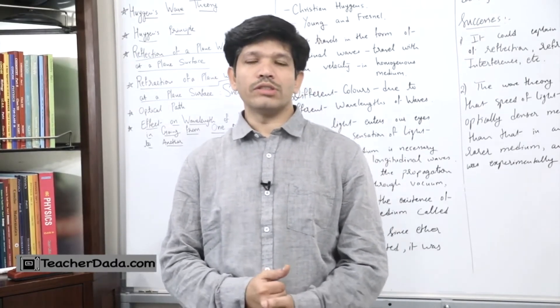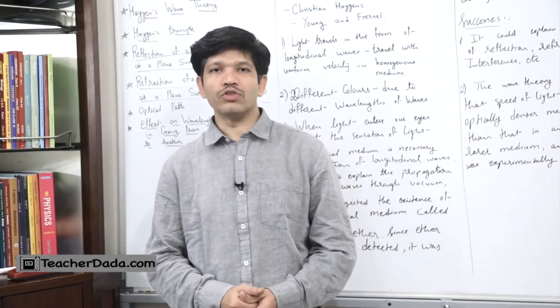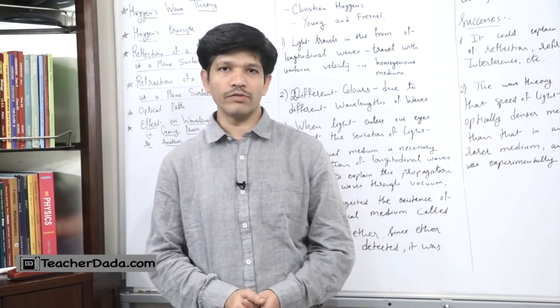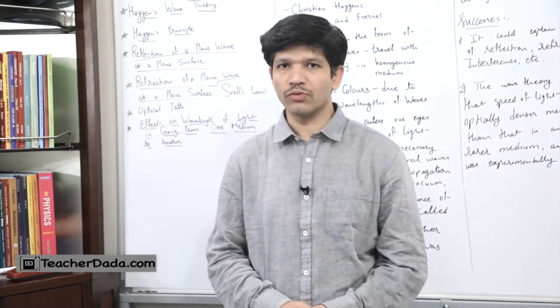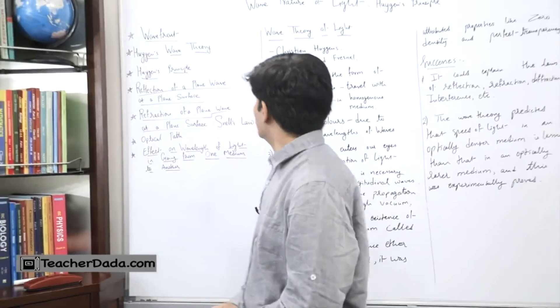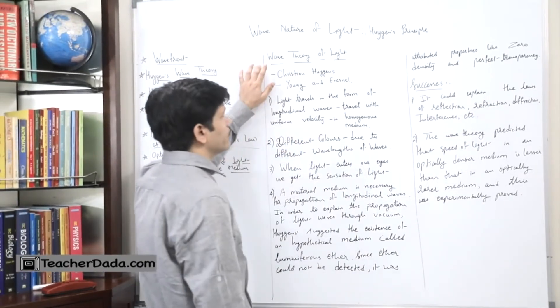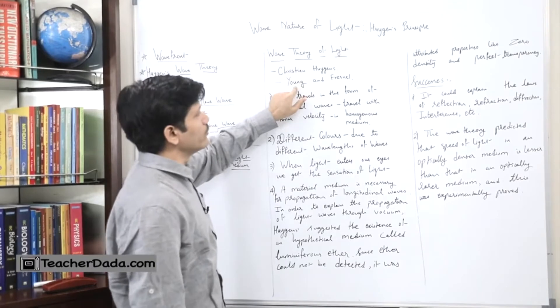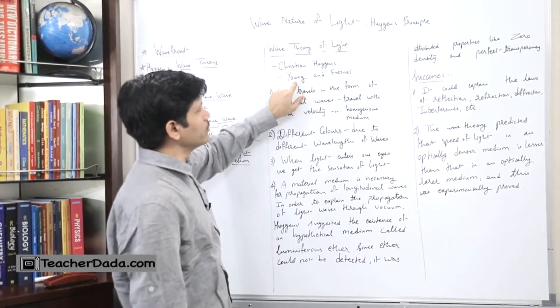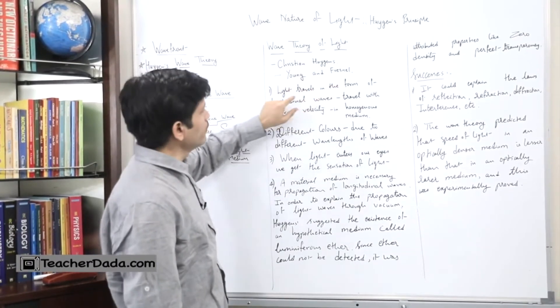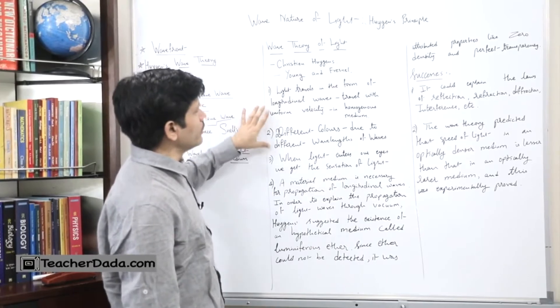Let us study about the wave nature of light or wave theory of light. The wave theory of light was given by Christian Huygens and later on it was developed by two other scientists, Young and Fresnel.